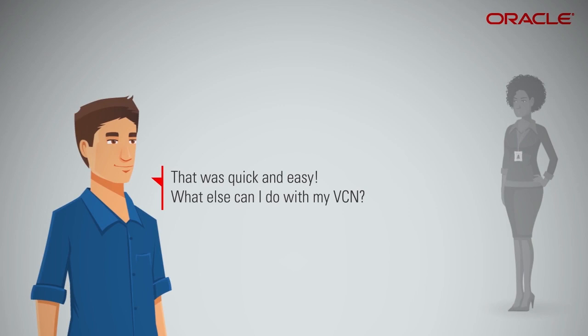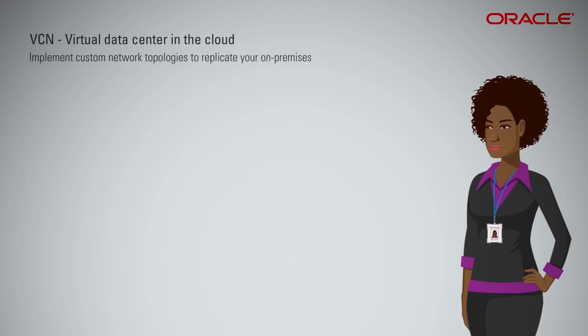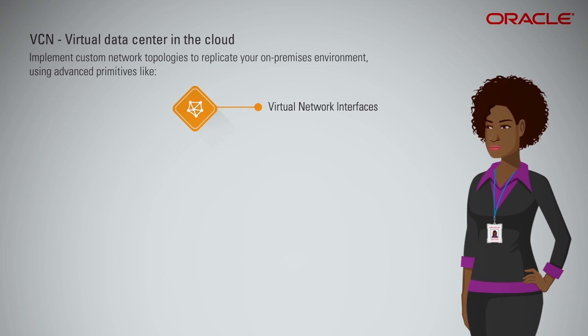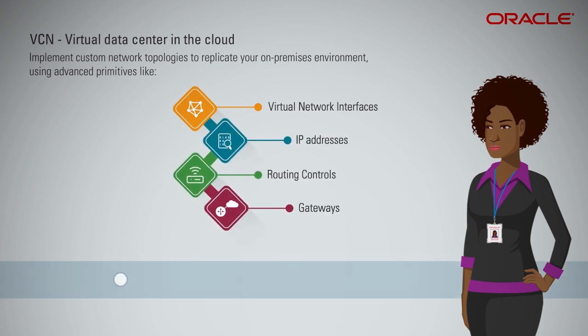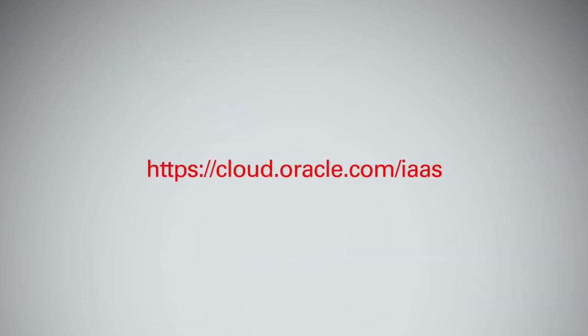That was quick and easy. What else can I do with my VCN? As we discussed earlier, a VCN is your virtual data center in the cloud. You can implement custom network topologies to replicate your on-premises environment, using advanced primitives like virtual network interfaces, IP addresses, routing controls, and gateways. You can find out more information about these features and the topologies you can achieve in our documentation. Please go to the Oracle Cloud Infrastructure Portal to learn more. Be sure to sign up for the free trial and get started right away.